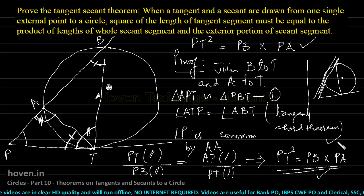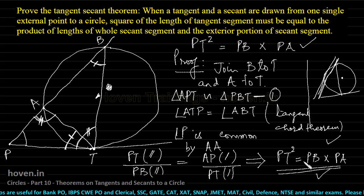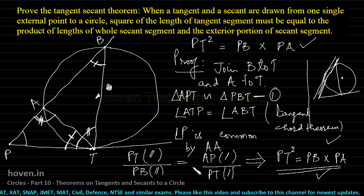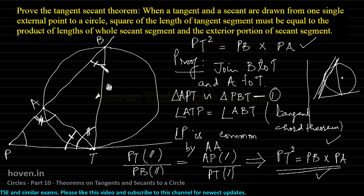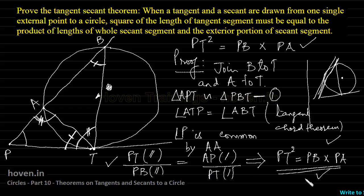This relation is the Tangent Secant Theorem. In an exam, if PB and PA are given, you multiply them and take the square root to get the tangent length. The proof was done by first establishing the angle equality, which led to triangle similarity, and from the ratios of corresponding sides we immediately reached PT squared equals PB times PA.